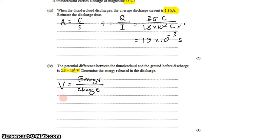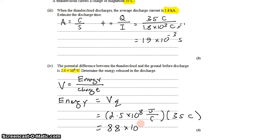To rearrange for total energy, we multiply by charge: voltage times charge. 2.5 times 10 to the eighth volts, which is joules per coulomb, multiplied by 35 coulombs. Coulombs cancel out, and to two significant figures we get 88 times 10 to the eighth joules.